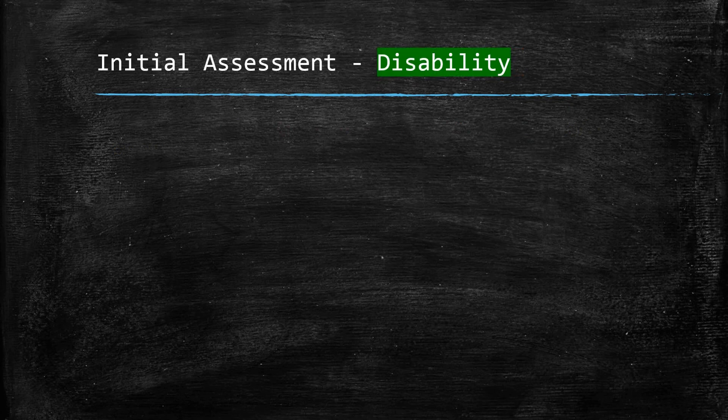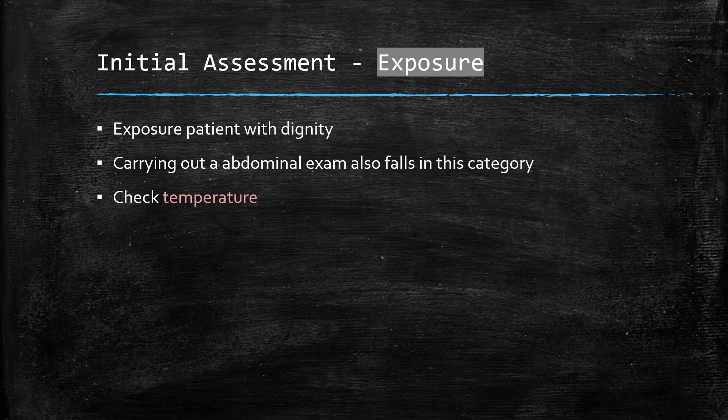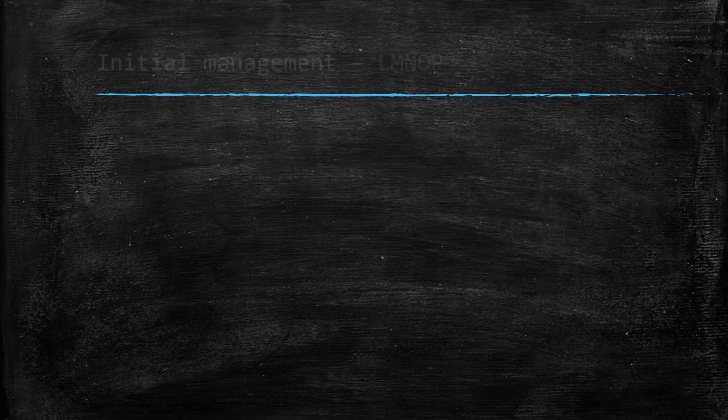D is for disability: here we check the GCS and blood sugar. E is for exposure: we must always show courtesy when examining a patient. At this stage we would also carry out an abdominal examination if warranted, and check the temperature of the patient.